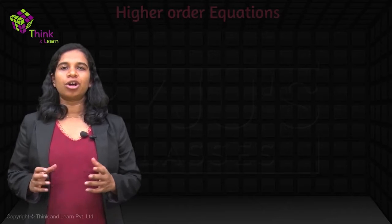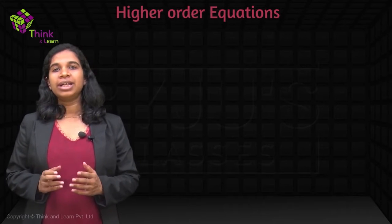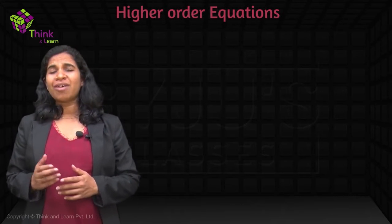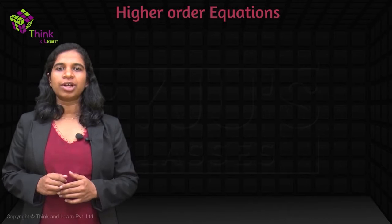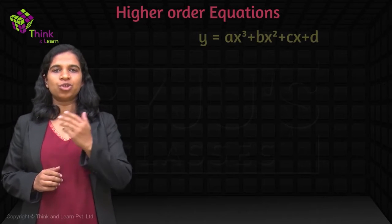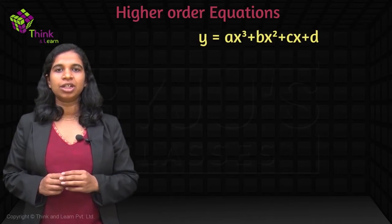Now that we've seen and understood how to solve quadratic equations, let's see if we can do something with higher order equations — that is, equations with degree greater than 2. So you could have a cubic equation, for example, which would be written as Ax cubed plus Bx squared plus Cx plus D.